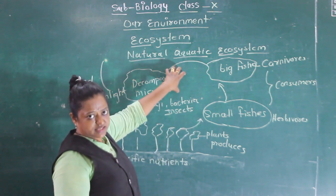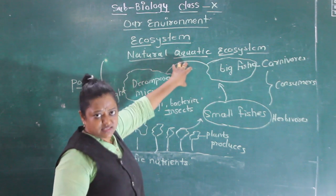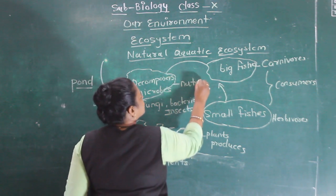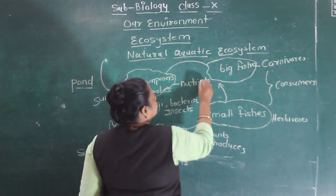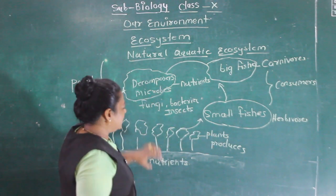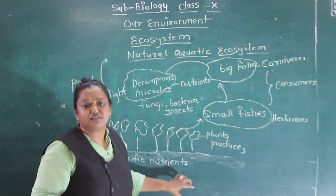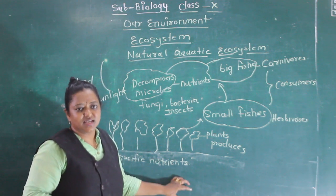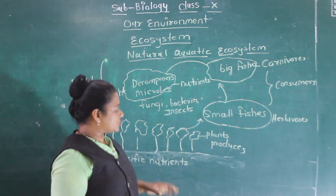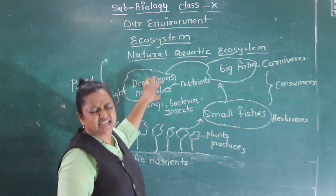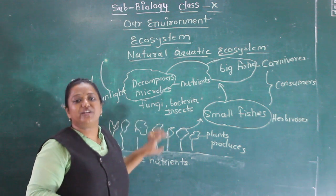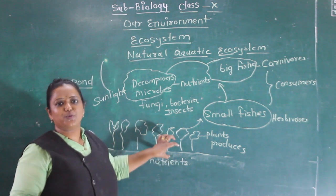Now what happens next? These decomposers utilize this food, which provides nutrients to them as well. At the same time, the part which they do not require will be deposited into the soil in the form of humus. The top layer of soil contains a large amount of humus, which makes the soil fertile. So that part which the insects or microbes do not require will go into the soil, and the plants will then utilize these nutrients again to produce food.